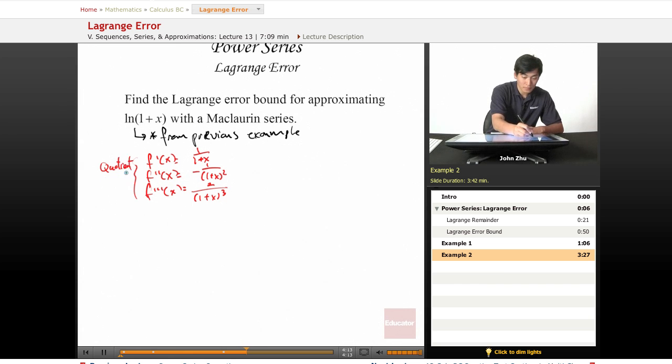Now we have to notice a pattern here. f^(n)(x) equals (-1), because it's alternating, times (n-1), times (n-1) factorial,